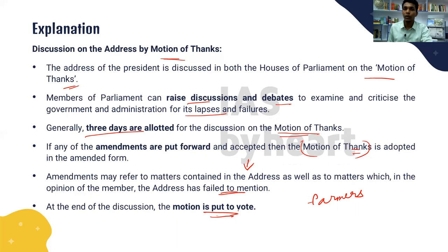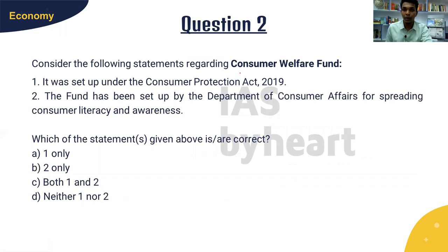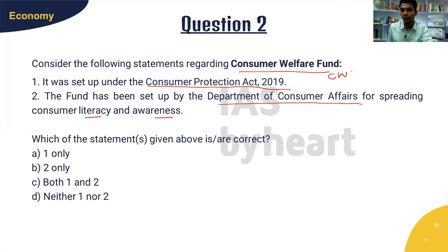The next question is from economy and talks about the Consumer Welfare Fund, which was in news recently. It was set up under the Consumer Protection Act 2019 and by the Department of Consumer Affairs — both these statements are wrong. The Consumer Welfare Fund was set up under the GST Act, and it was set up by the Department of Expenditure — actually the Department of Revenue — not the Department of Consumer Affairs. The answer is neither one nor two.